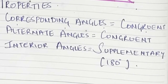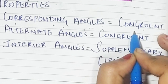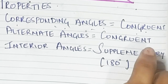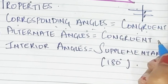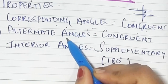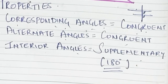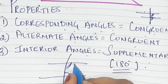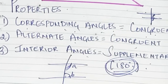Before doing Practice Set 2.2, let's cover the properties first. The first property says that corresponding angles are congruent — each pair of corresponding angles formed by two parallel lines and a transversal are congruent. Similarly, alternate angles are also congruent. Interior angles are supplementary, meaning together they measure 180 degrees. These are the three properties you need to keep in mind.